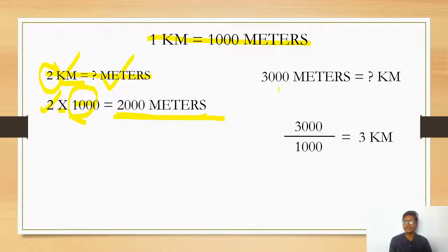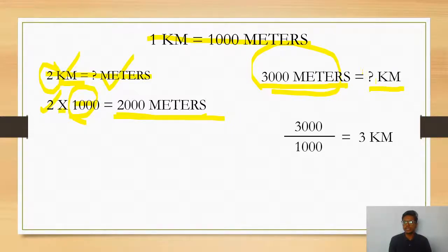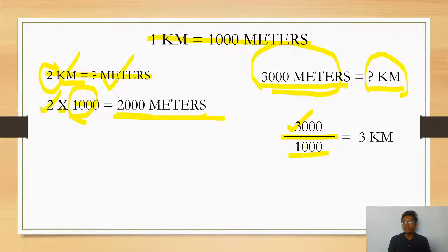Now if the number is given in metres and you have to convert it to kilometres, you divide that number by 1000. For example, if you have to convert 3000 metres into kilometres, then 3000 divided by 1000 equals 3. So 3000 metres equals 3 kilometres.